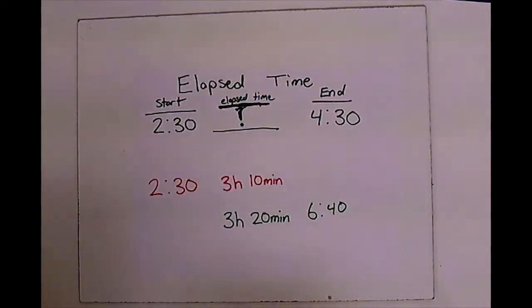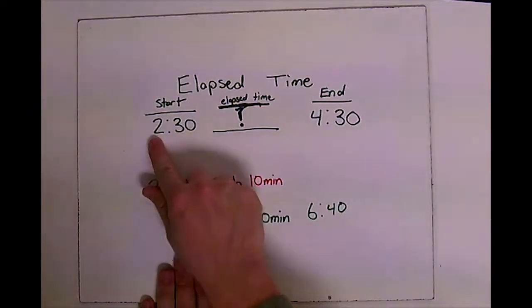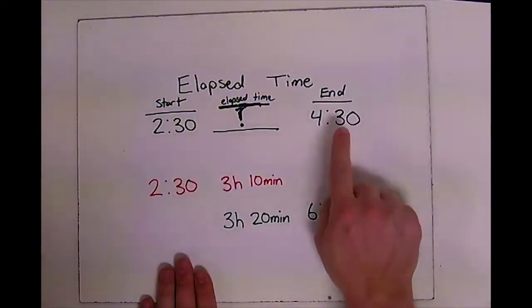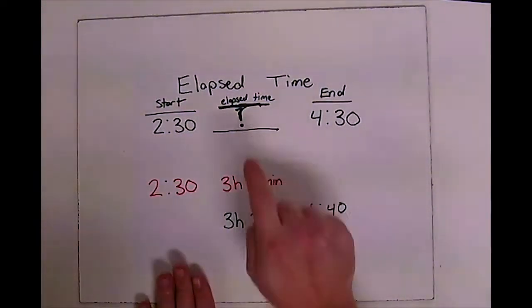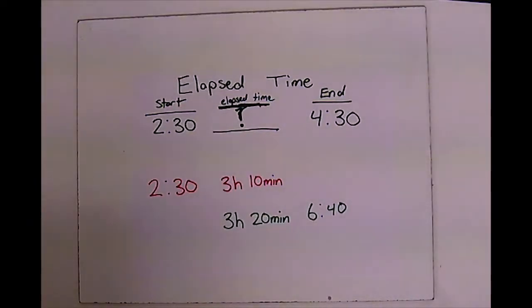Elapsed time. There's three different ways that you're gonna see problems. They'll give you a start time, an end time, and then you need to find the elapsed time in the middle. Elapsed time just means how much time passed in between those times.